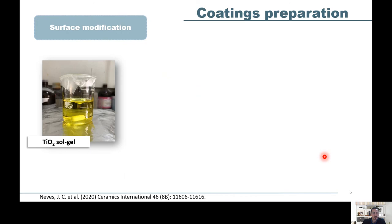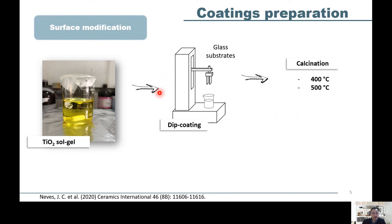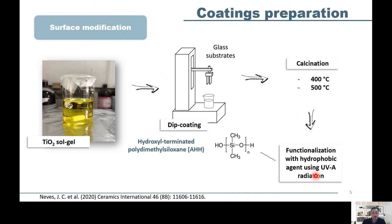In this work, the Sol-Gel method was used to prepare an alcoholic solution of titanium alkoxide to deposit thin films on glass coupons by the dip coating method. The films were calcined at 400 degrees Celsius and 500 degrees Celsius and modified using UVA radiation with two hydrophobic agents. The first one was hydroxyl-terminated polydimethylsiloxane and the second one was vinyl-terminated polydimethylsiloxane as shown here.